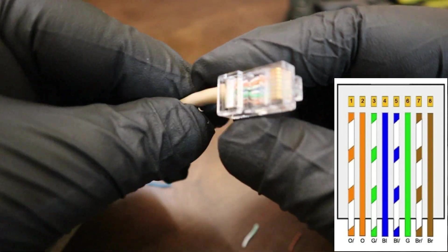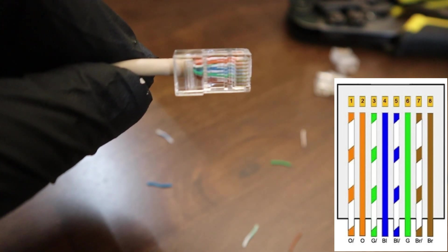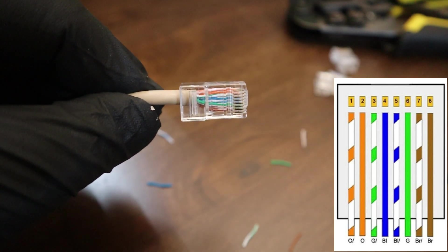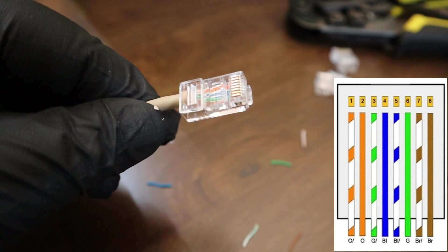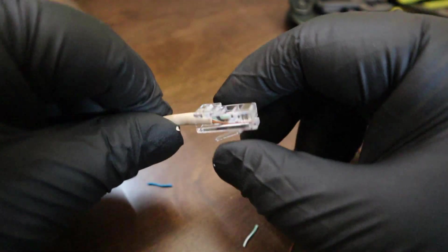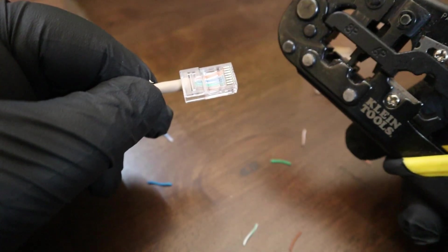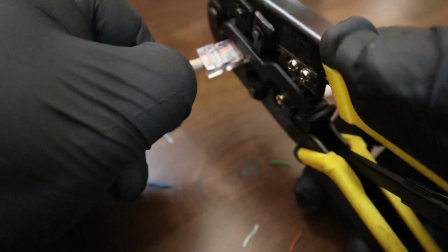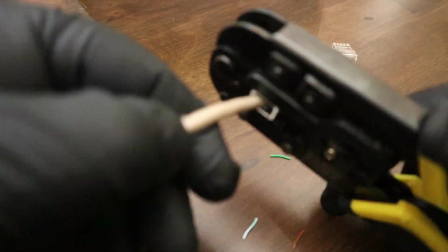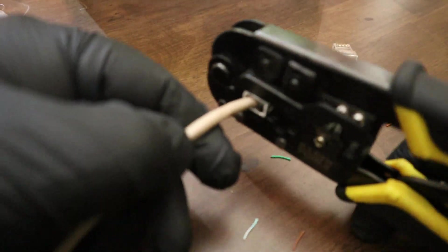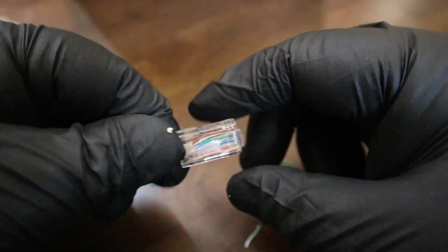Now before you crimp them, once again make sure that it's in perfect order, one through eight, the same color coordination as you see in the picture. So once I verify, yep that's correct, push it in a little bit more, grab my crimpers, and twice for good measure. And there you go, that's my first connection, my first plug made.